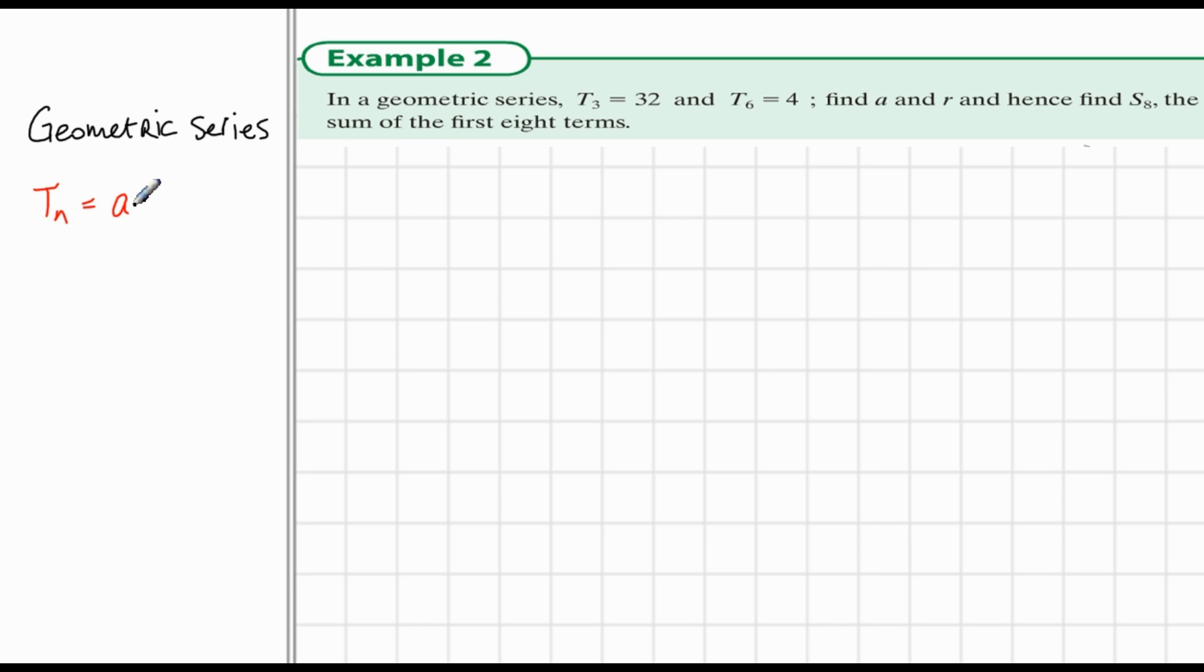The formula for a term in a geometric series is term n is equal to ar to the power of n minus 1. Since term 3 is equal to 32, we know in this formula n is 3 and term n is 32. So we can write ar to the power of 3 minus 1, which is 2, is equal to 32.